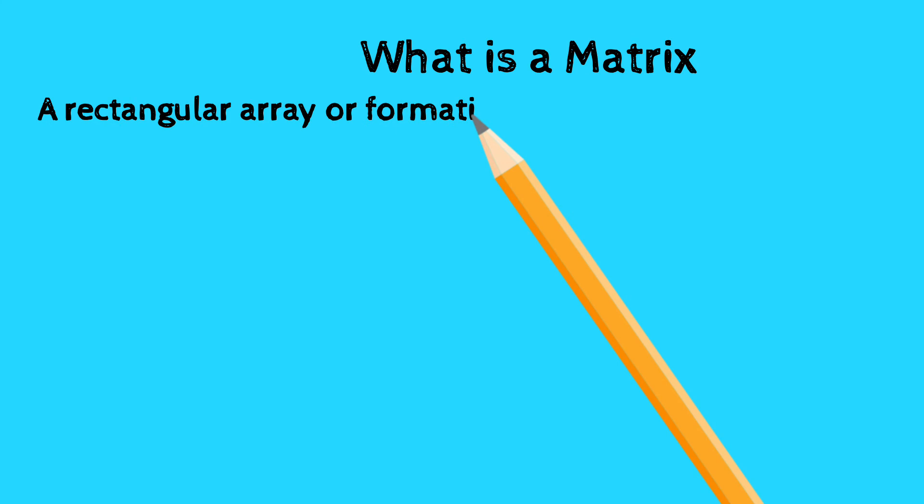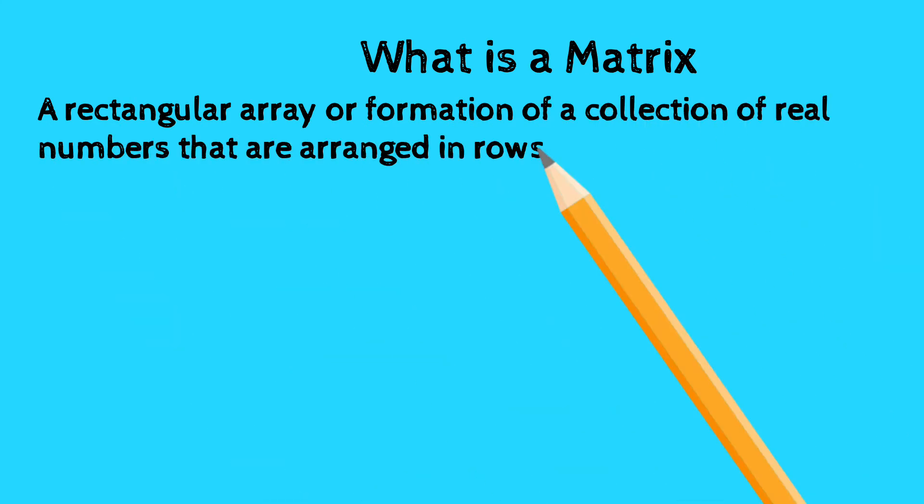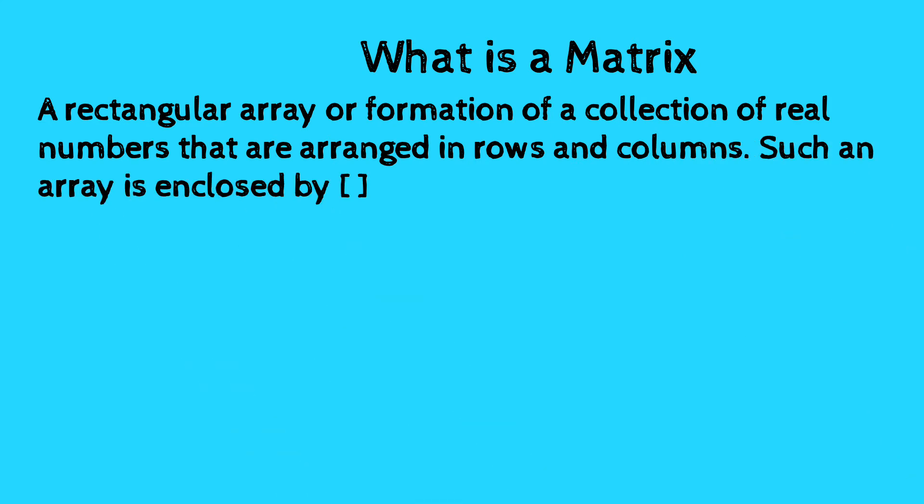A matrix is a rectangular array or formation of a collection of real numbers that are arranged in rows and columns. Such an array is enclosed by brackets. See this example. Here P is a matrix which has three rows and four columns.